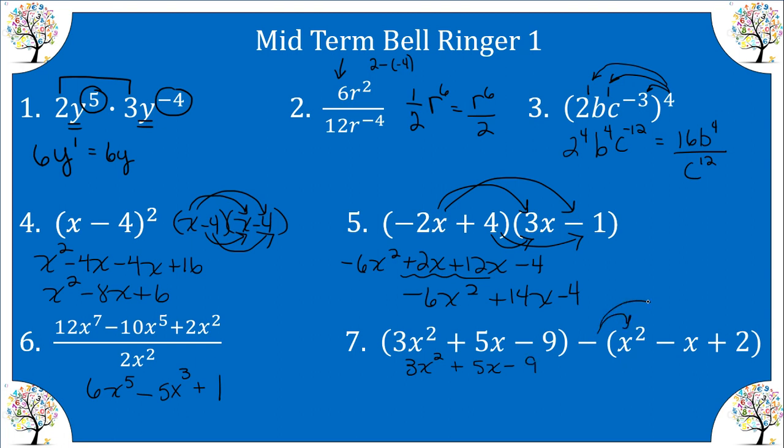and then we're going to distribute this negative to each term in the second trinomial. We get negative X squared plus X minus two.